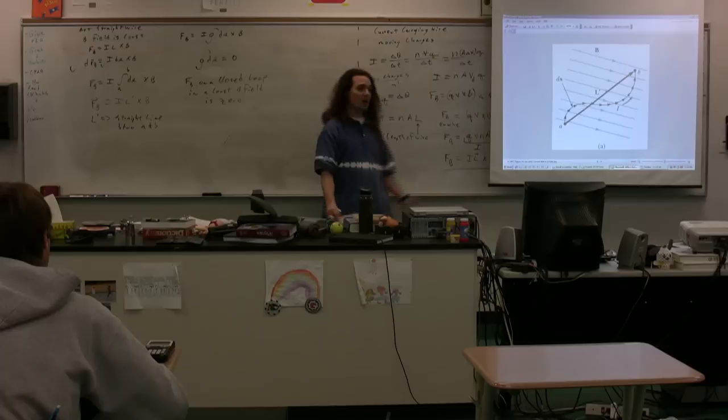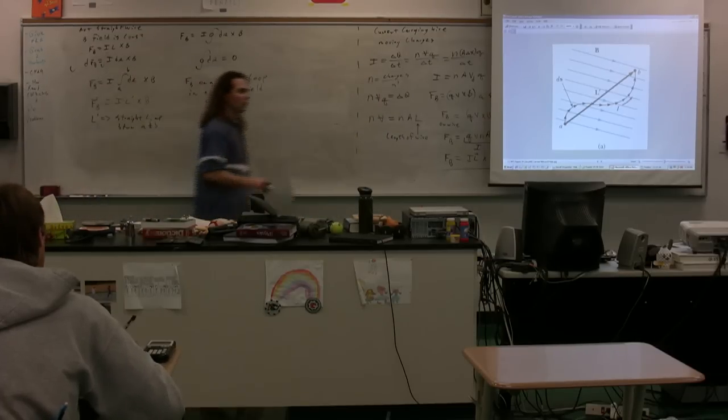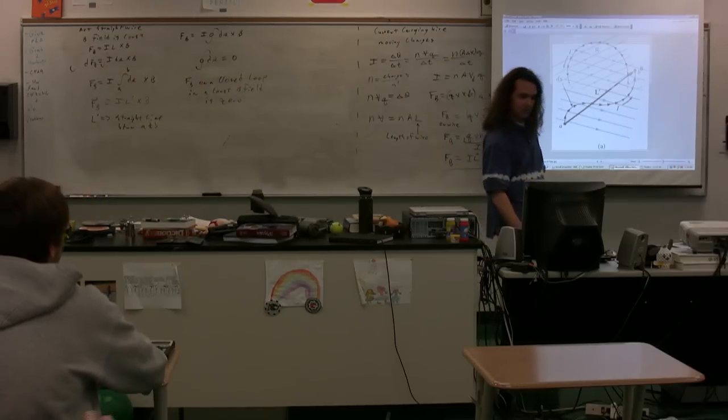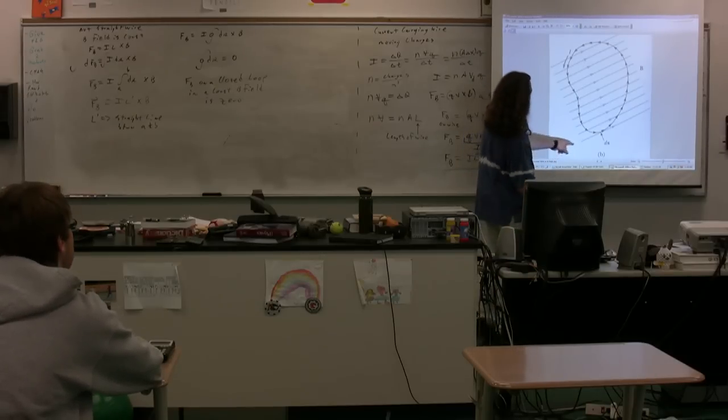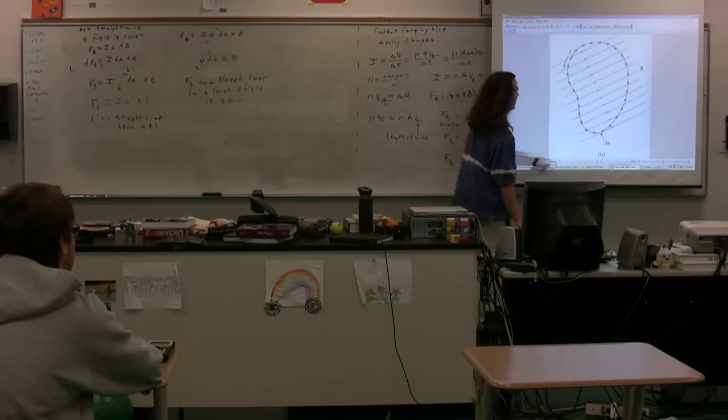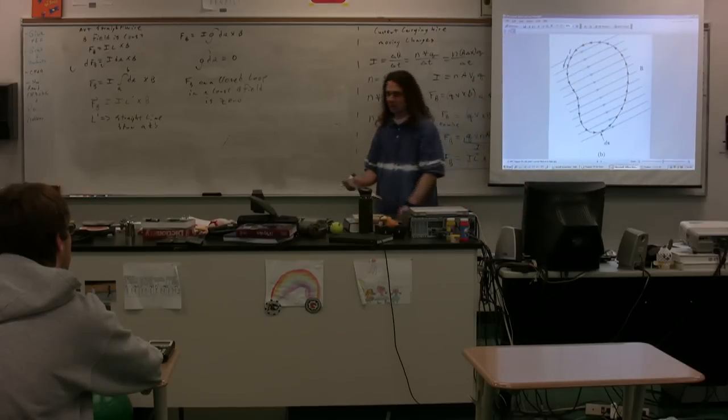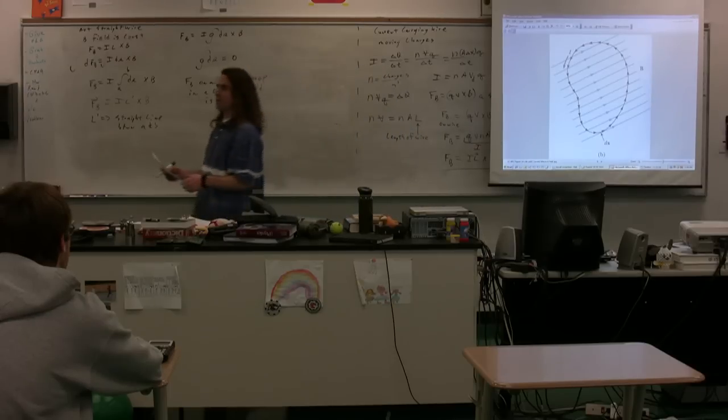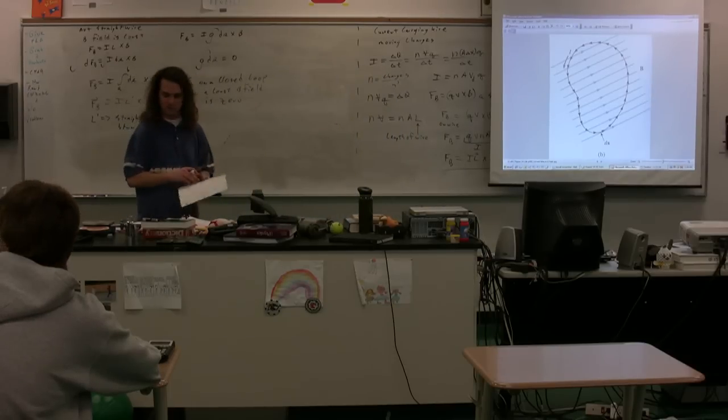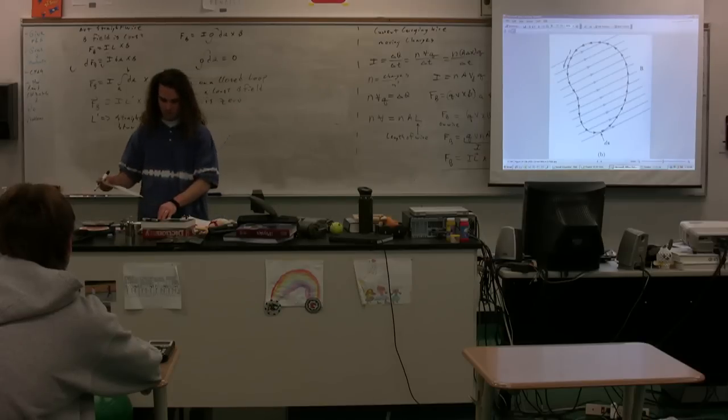The net force, because L' is essentially zero. When you go all the way around, and this is actually a poor picture, the magnetic field should extend beyond, only to show that the whole thing is in the constant magnetic field, but the net force on this loop, because if you add up all of the vector sum of all the ds's, you will get zero.